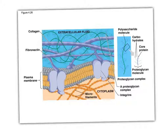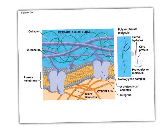Depending upon the dimer that's there, it determines what it can bind to. For example, alpha 5 beta 3 can bind to fibronectin; alpha 3 beta 1 can bind to collagen. Then you have these polysaccharide molecules — there's a core unit which is a polysaccharide, and then proteins are bound to it, arranged at 90-degree angles. That core unit with its attached proteins is called a proteoglycan — a mix of proteins and sugars.